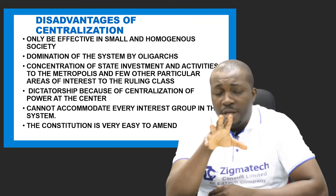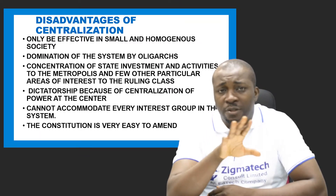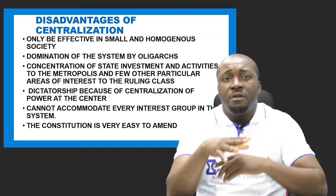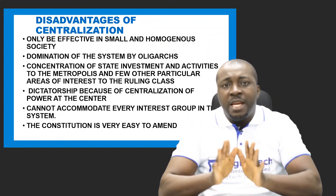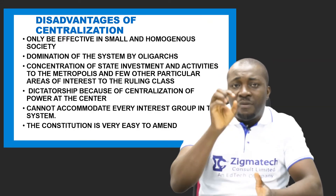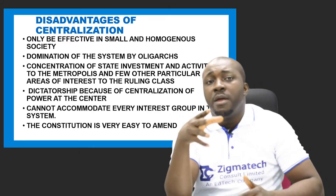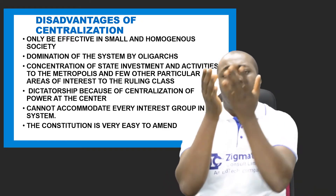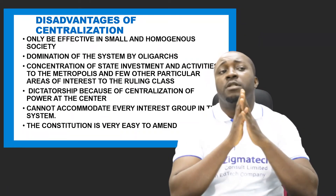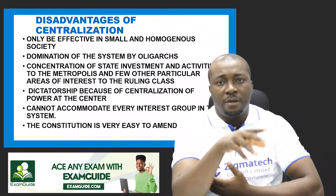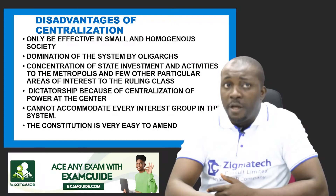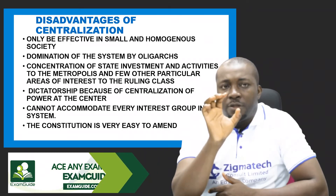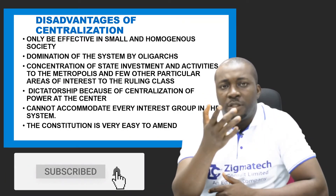Now, the disadvantages. One, it is only effective in a small and homogeneous society — small enough that the central government can actually oversee everything. It works better in a homogeneous society where one ethnic group makes up the state. In large organizations with branches all over the country, you shouldn't centralize power; each unit should have some level of autonomy. Also, there is domination of the system by oligarchs — few elites dominate the political system where power is centralized.